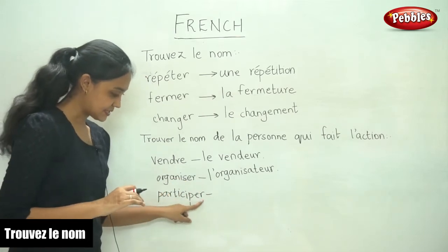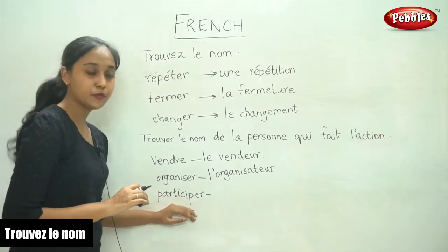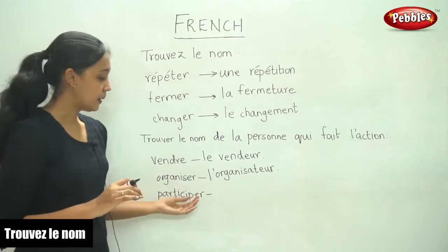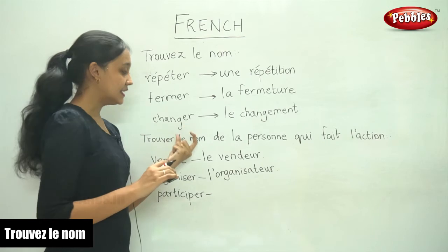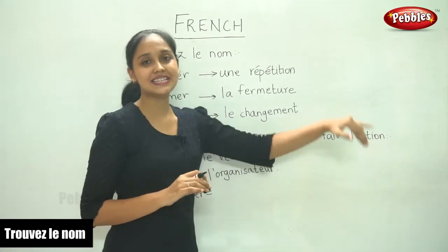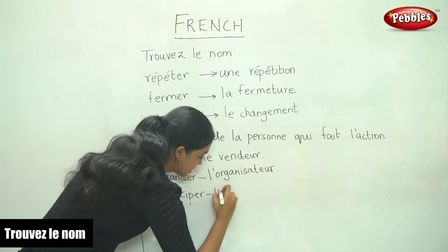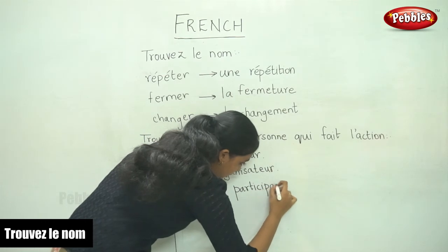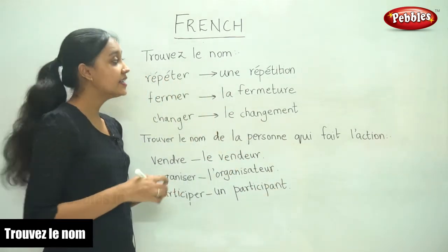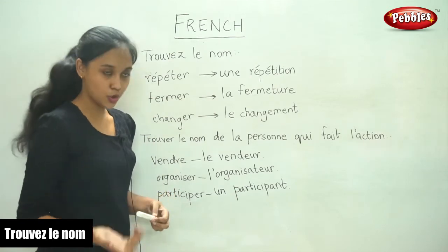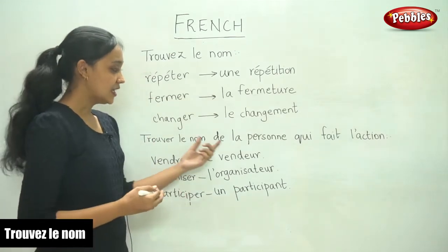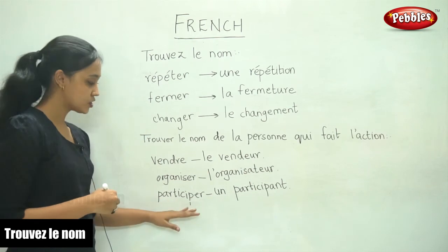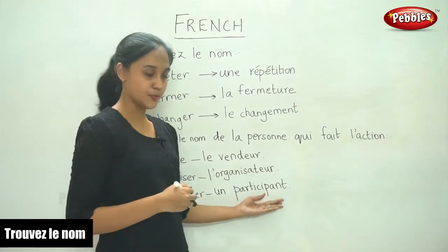And finally, participer. If you have to find the noun form, it will be la participation. But here we are asked to find the name of the person who does the action, so it is un participant. The action is participate - who does this action? Un participant. If you have to find the noun form it is participation, but the name of the person who does the action is un participant.